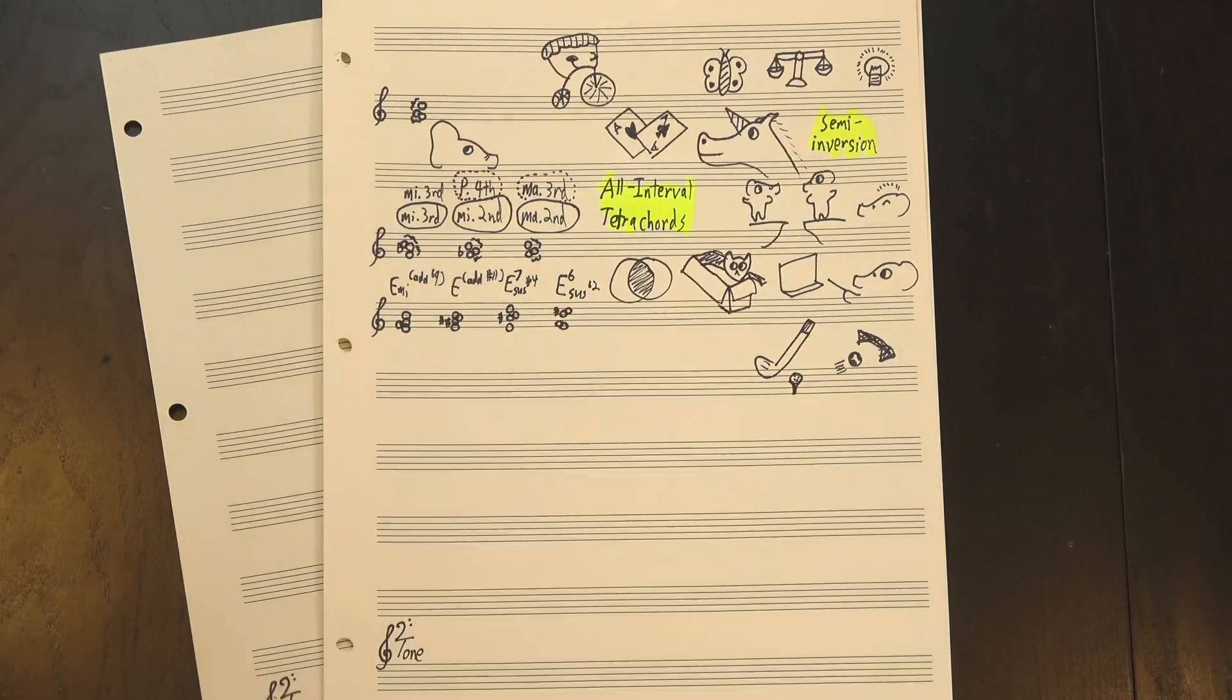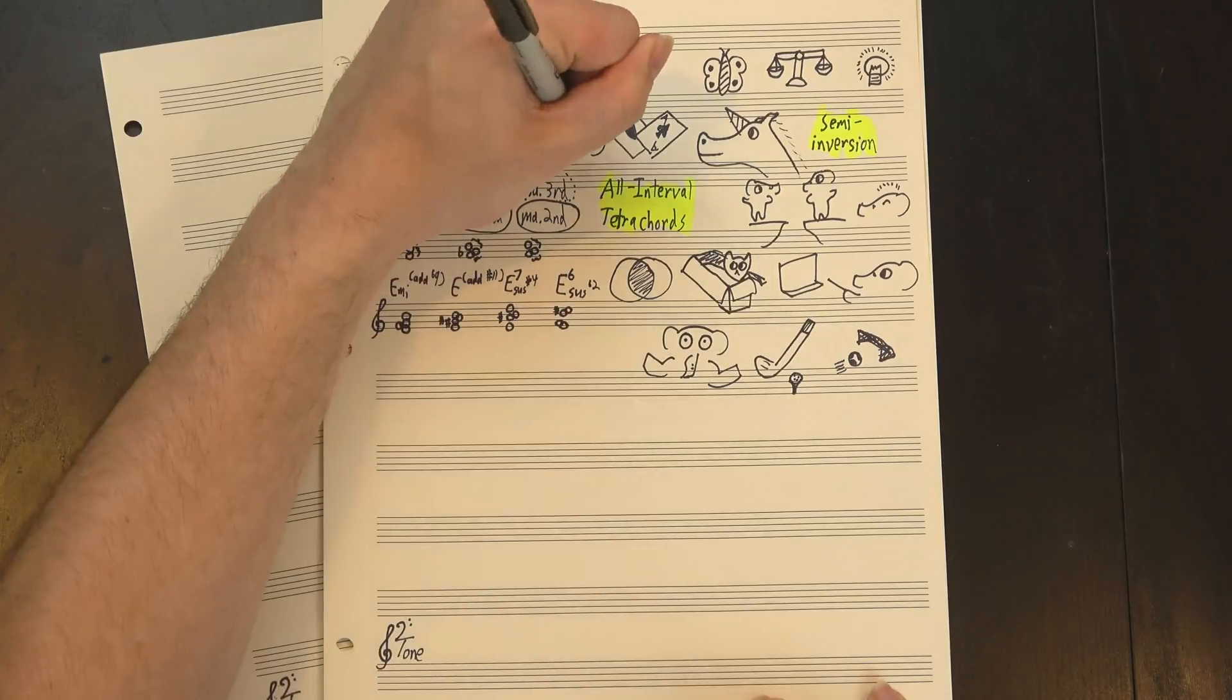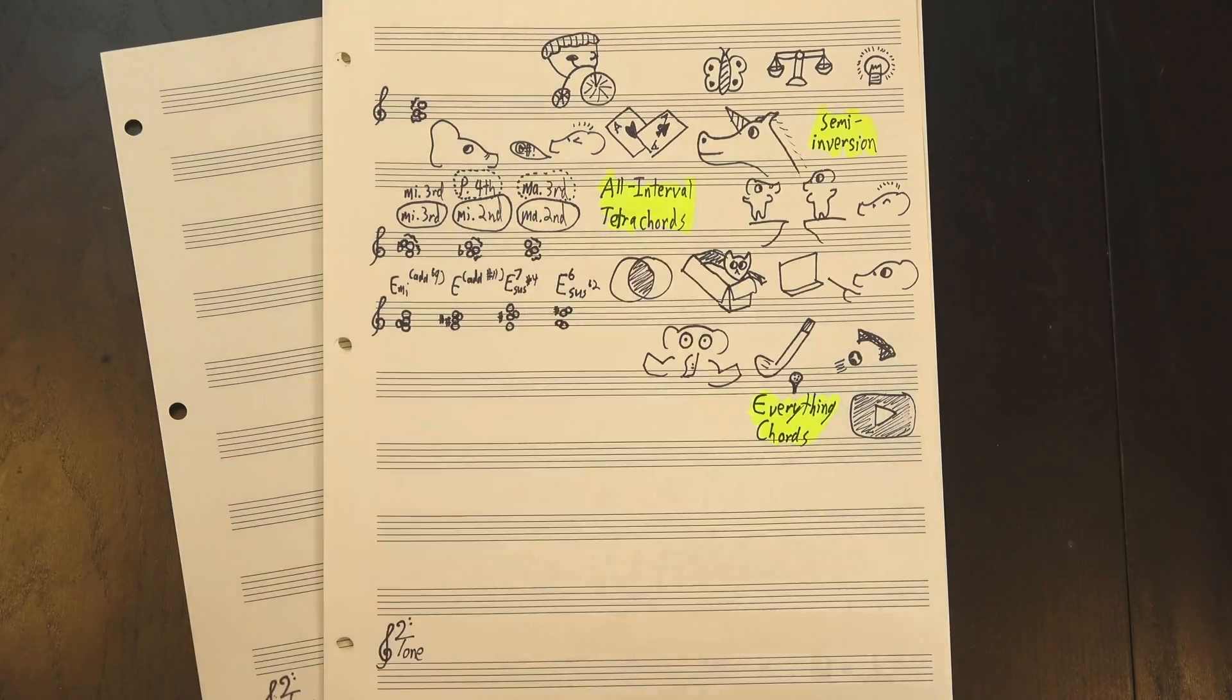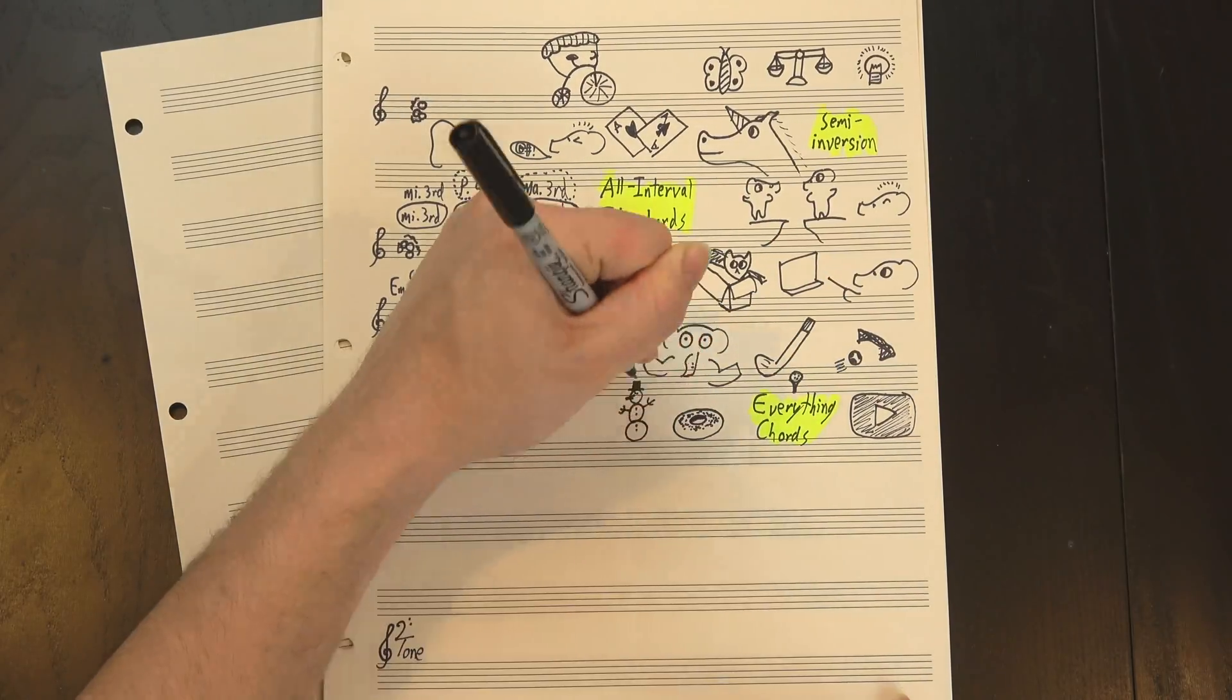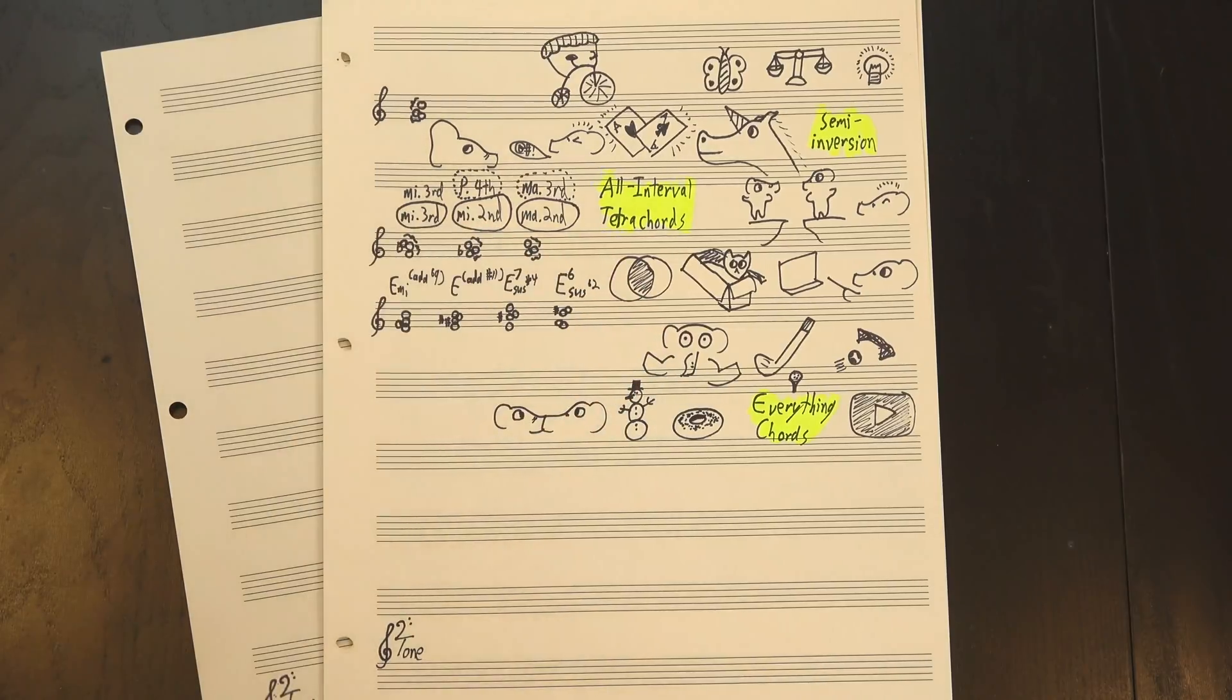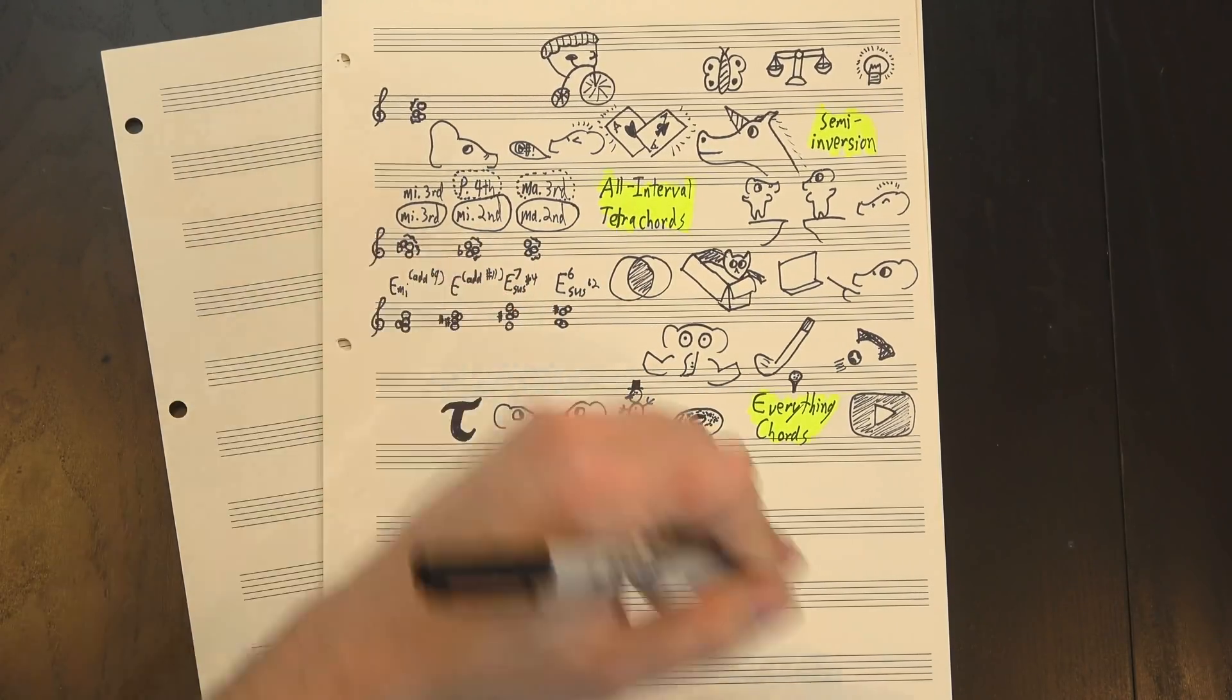Tetrachord means a chord with four notes, and all-interval means... well, you can probably figure that out yourself. Still, though, it's a bit of a mouthful, so for the rest of this video, I'm just gonna call them everything chords. They're like everything bagels, but for harmony. And these chords are actually, again, connected in pairs. We're doing a lot of pairing this episode, aren't we? That's set theory for you. They'd reduce all of music to a single mathematical constant if they could.